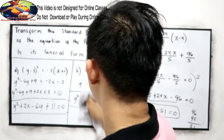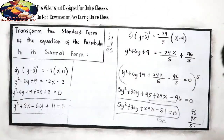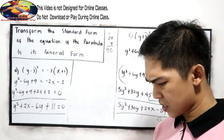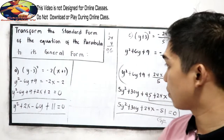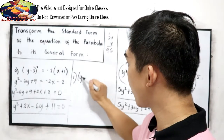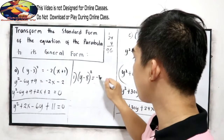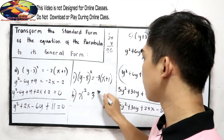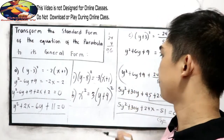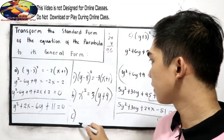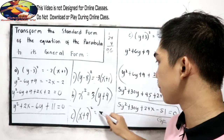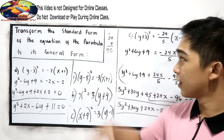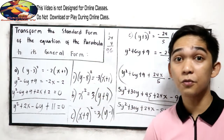Assignment: Transform the standard form of the equation of the parabola to its general form. Number 1: (y minus 8) raised to the 2nd power is equal to negative 3(x plus 1). Letter B: x squared is equal to 3(y plus 4). Letter C: (x plus 4) raised to the 2nd power is equal to 3(y minus 1).